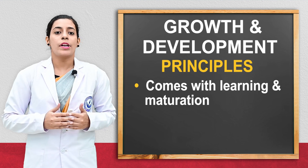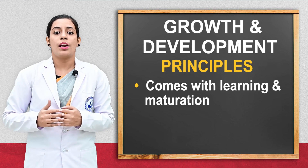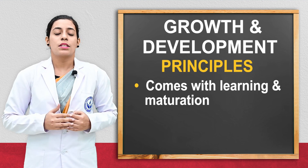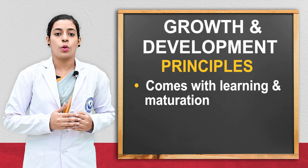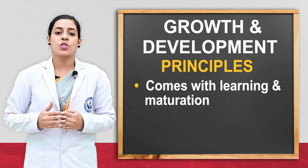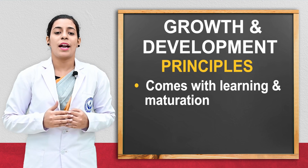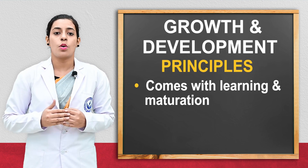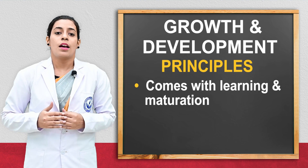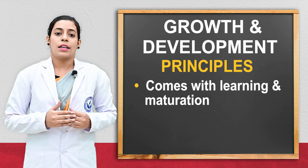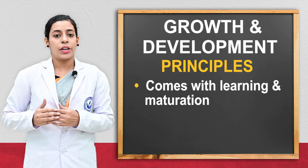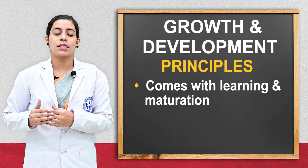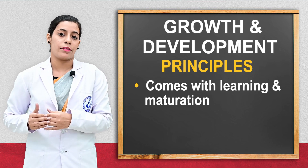The next principle is that growth and development come through learning and maturation. Every child will learn something by doing, and maturation brings behavioral changes after the teenage years — it occurs between the different stages of life.